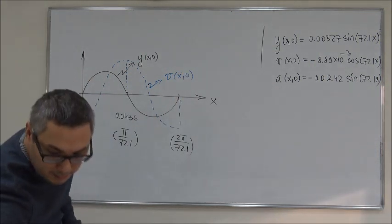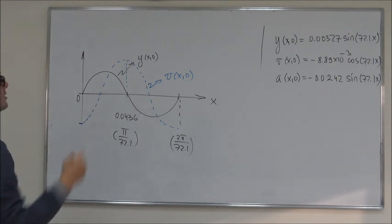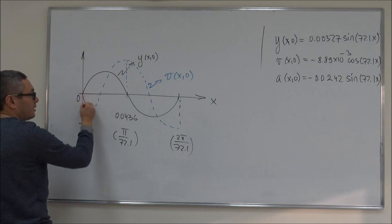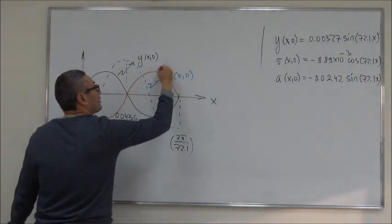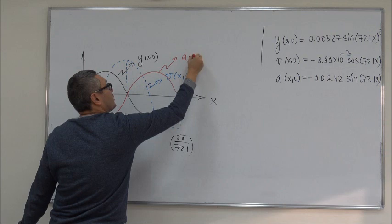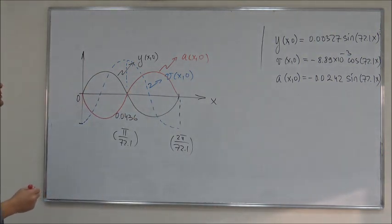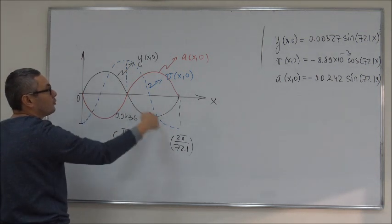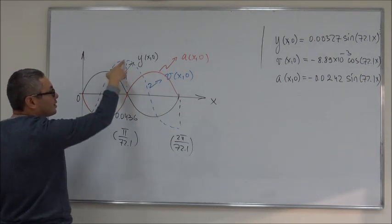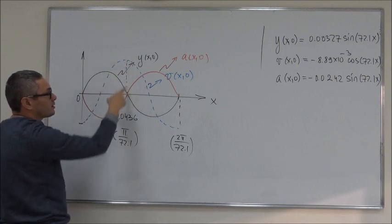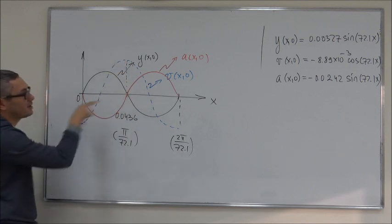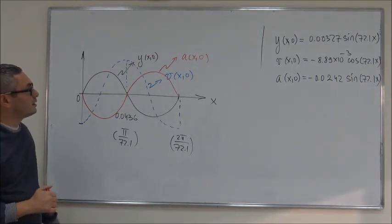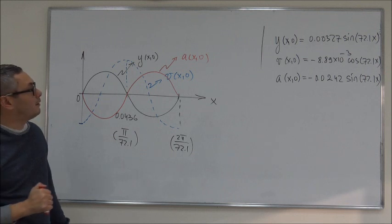Acceleration is also a sine function but with a negative sign, so it goes like this. So, this is our acceleration at time equal 0. Well, if you note, for example, the blue line which is velocity, the slope of the blue line at this point is equal to 0 and that's why the acceleration is 0. So, you can double check this graph by looking at some specific values of x.